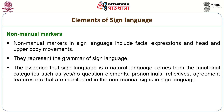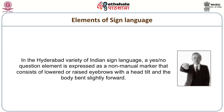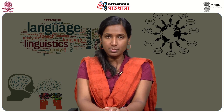These functional categories are manifested in the non-manual markers. For example, in the Hyderabad variety of Indian Sign Language, a yes-no question element is expressed as a non-manual marker consisting of lowered or raised eyebrows with a head tilt and the body bent slightly forward. For instance, 'you come' is a simple sentence, but with the non-manual markers, 'you come' becomes a yes-no question construction. The non-manual markers differentiate a simple sentence from a yes-no question construction.